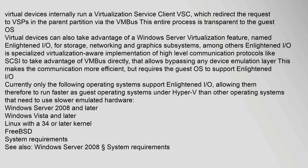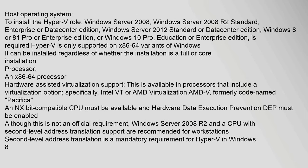System requirements: to install the Hyper-V role, a host operating system is required including Windows Server 2008, Windows Server 2008 R2 Standard, Enterprise or Datacenter Edition, Windows Server 2012 Standard or Datacenter Edition, Windows 8 or 8.1 Pro or Enterprise Edition, or Windows 10 Pro, Education, or Enterprise Edition. Hyper-V is only supported on x86-64 variants of Windows and can be installed regardless of whether it is a full or core installation. The processor must be an x86-64 processor with hardware-assisted virtualization support, available in processors that include a virtualization option.